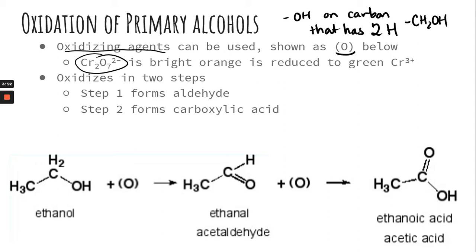Sometimes questions ask about a color change. Dichromate is bright orange, and it reduces down to the chromate(III) ion, which is green. So the color change goes from orange to green.